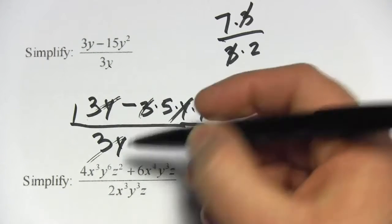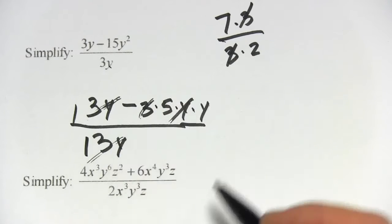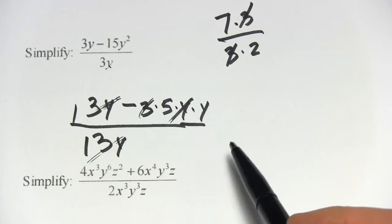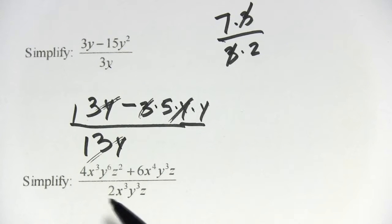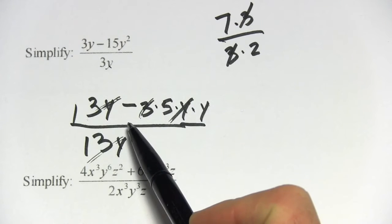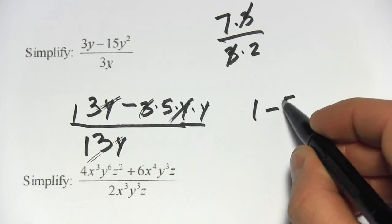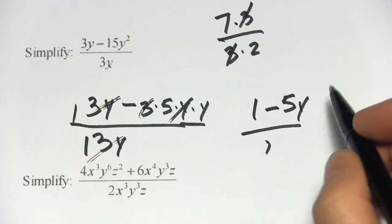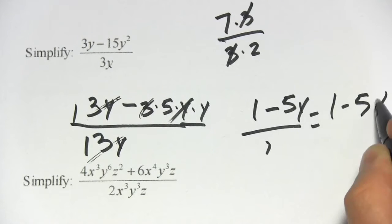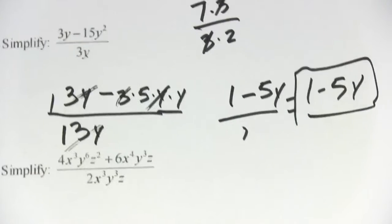And you could think about putting a 1 on the bottom. In this case, anything over 1 is just itself, so we're not going to have a fraction anymore. But we're going to have 1 minus what's left over here, 1 minus 5 times y. And that's over 1, but it means 1 minus 5y is our answer.